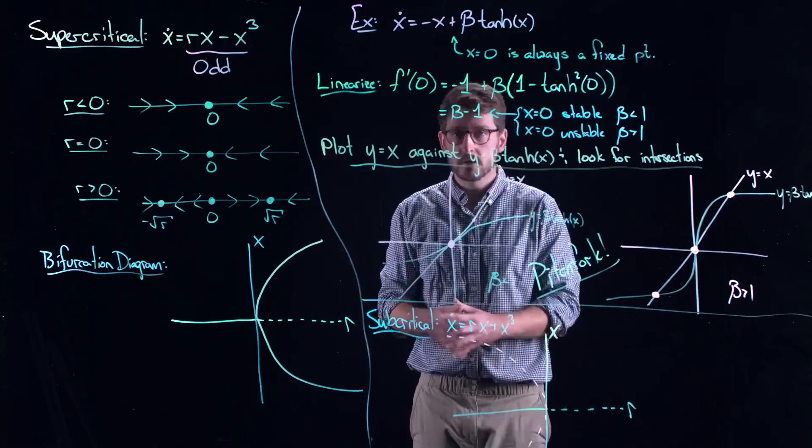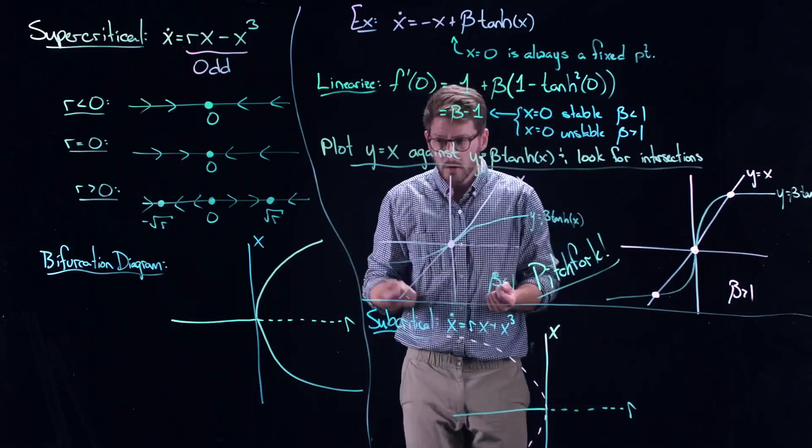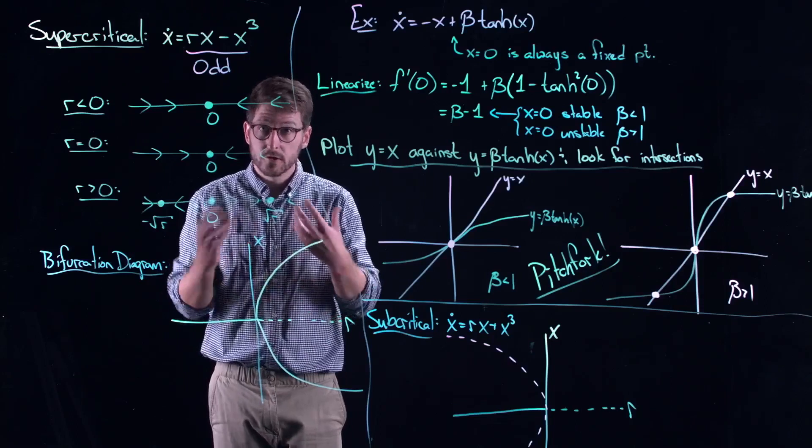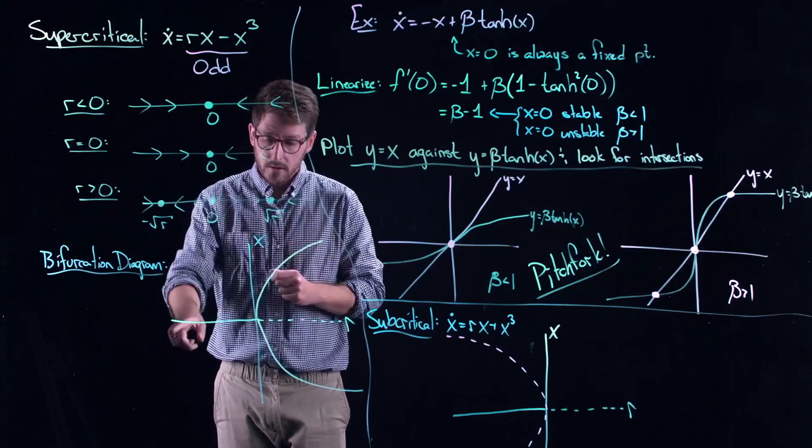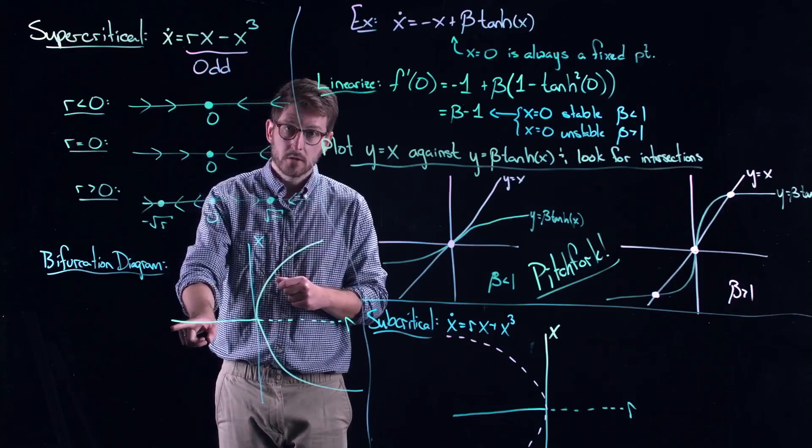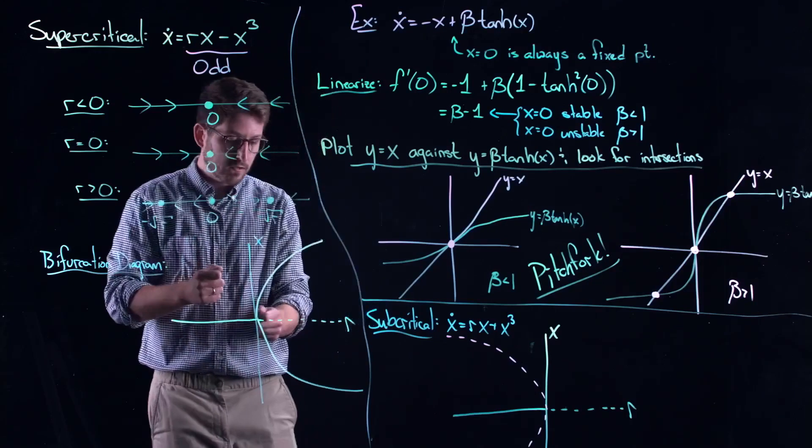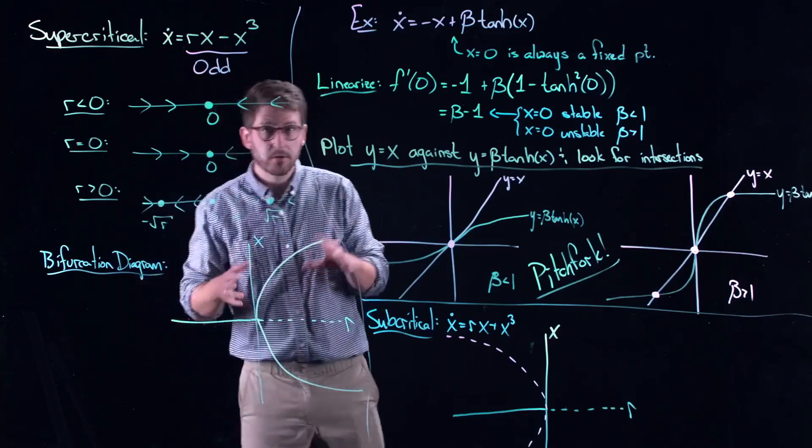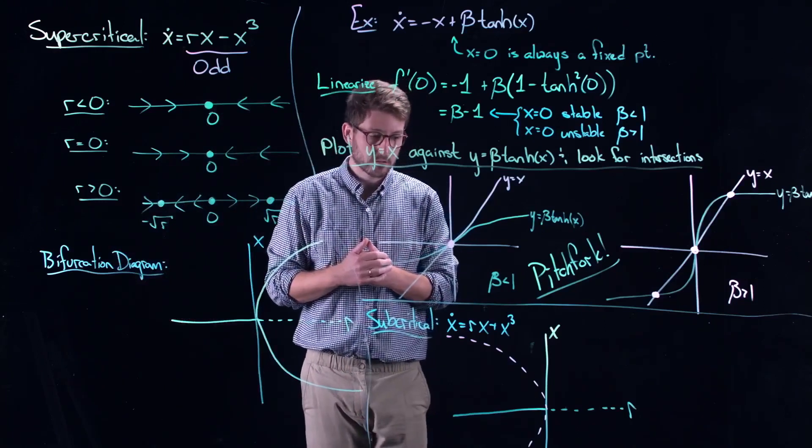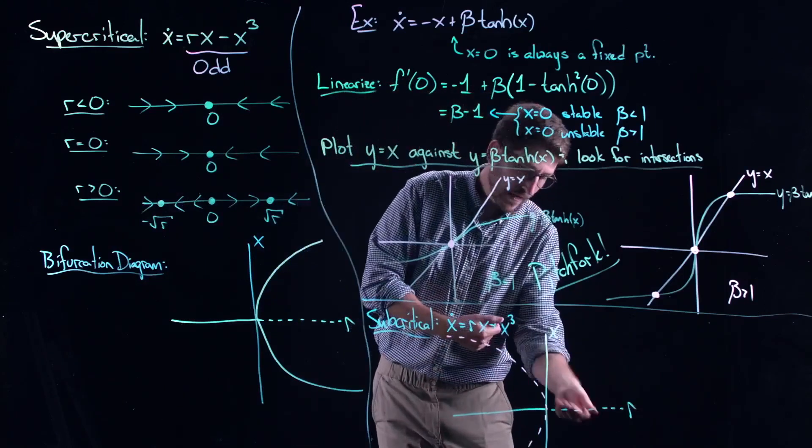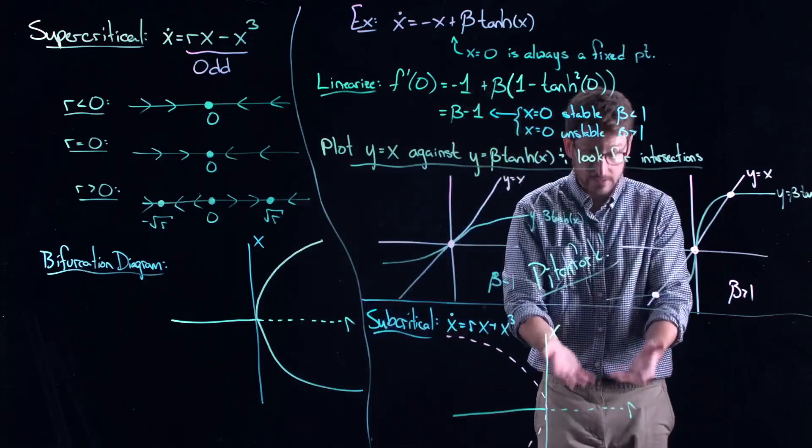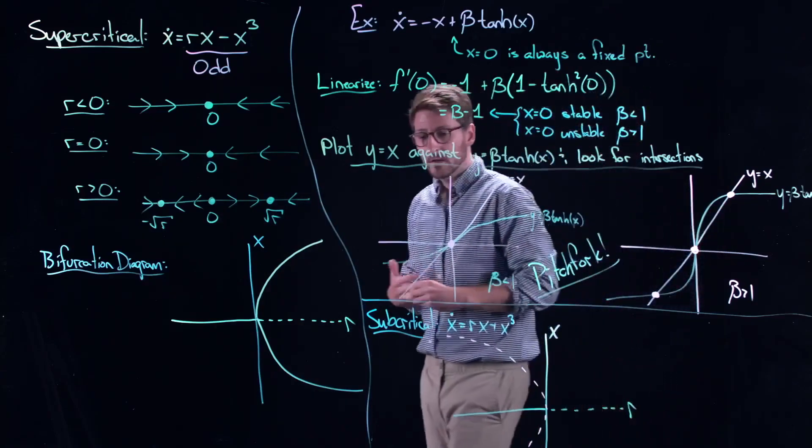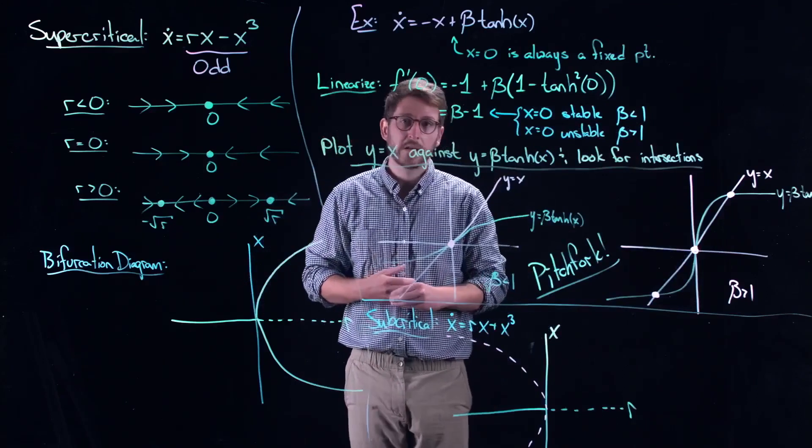Whereas, it's much easier to see a supercritical pitchfork bifurcation taking place in a system if you're just observing its dynamics and changing the parameter value. Because they could just evolve to some trivial steady state, x equals zero. And then as you cross some critical threshold, you'll see them converge into something completely different. Maybe one of these two symmetrically related branches. Whereas here, there's nothing to catch you when r is positive. So you get this unstable branch where nothing interesting happens.